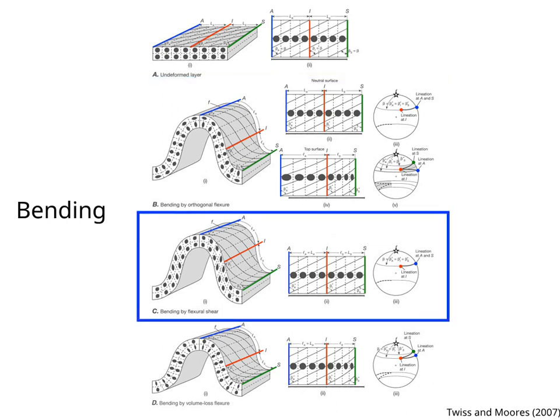Figure C shows bending by flexural shear. The strain ellipses on the profile view indicate maximum shear at the inflection line. The shear is towards the anticlinal hinge and away from the synclinal hinge. The shear is zero at the anticlinal hinge and synclinal hinge.